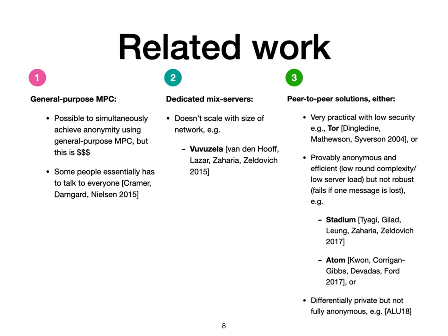There are three main ways of trying to accomplish this. The first way is using general-purpose MPC. This achieves anonymity from the active adversary and robustness; however, it is very inefficient. There is a known lower bound that essentially says that some people will have to talk to everyone, so this is not going to work. The second approach is using a dedicated sequence of mix servers. This approach doesn't scale with the size of the network — as the network size increases, each mix server will have to process many onions, all the onions of the participants.